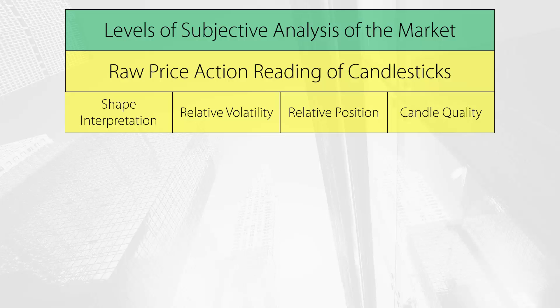The problem with candlestick patterns like hammers and shooting stars, for example, is that they usually ignore the context in which they appear, which is something that renders them obsolete. These patterns cannot be used as triggers to open trades. They must be used to form a logically consistent story that will be supplemented with other aspects of technical analysis.